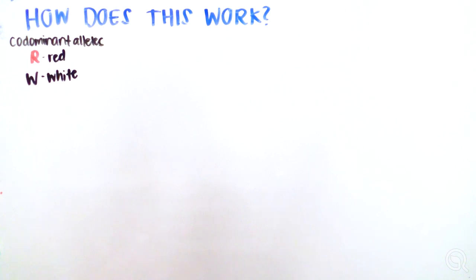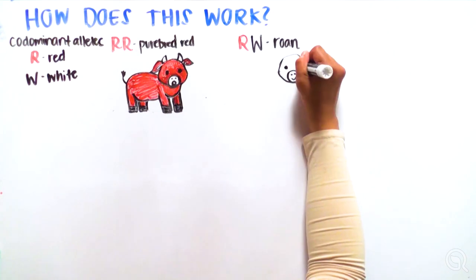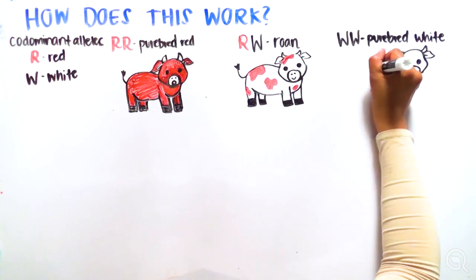Because each animal has two alleles of each gene, the three possible genotypes and phenotypes of these cows would be RR, purebred red, RW, roan, a mixture of red and white, and WW, purebred white.